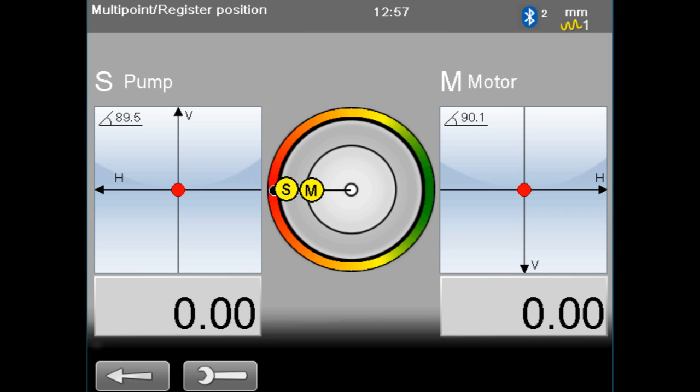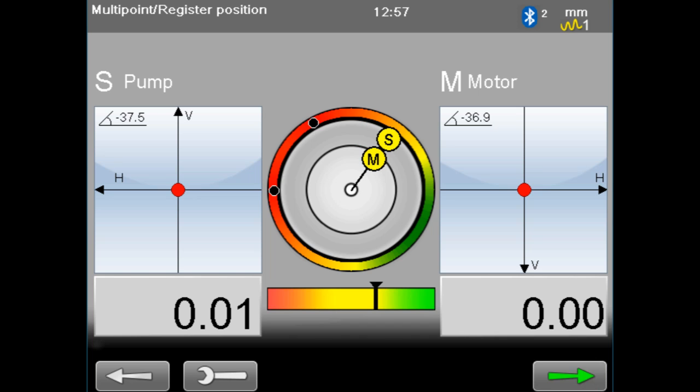As usual you may take the first measurement at any angle. A minimum of three points is required to reach a result. However, you may take as many measurements as you like. At any point in time you may delete a previously taken measurement by pushing the back button.